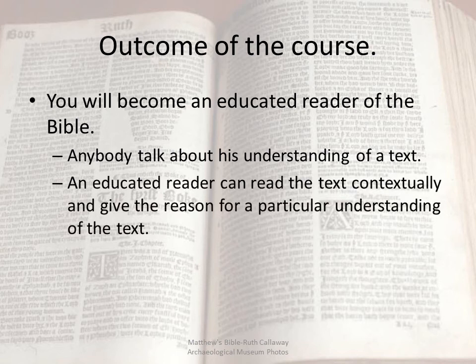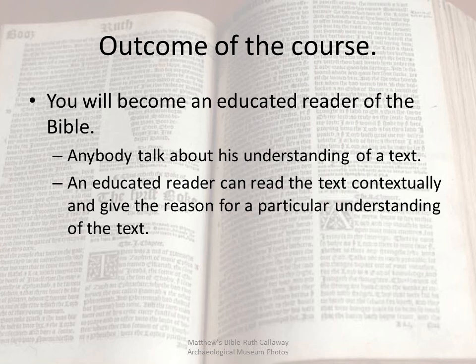The educated reader, on the other hand, reads the text carefully and contextually. He is also able to give reasons for particular understandings of the text — whether or not he agrees with those understandings, he can see how people arrive at them. It's important for the educated reader to recognize how context affects the understanding of the message, and also to articulate why and how people can propose various nuances and interpretations of a passage, and to recognize what their agenda is in their interpretation, or whether they are simply reading or using the text for a particular reason.